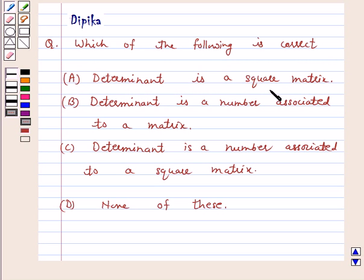A. Determinant is a square matrix. B. Determinant is a number associated to a matrix.